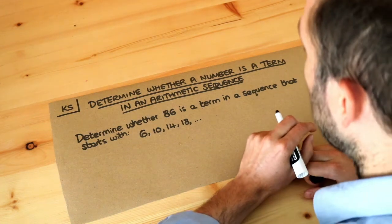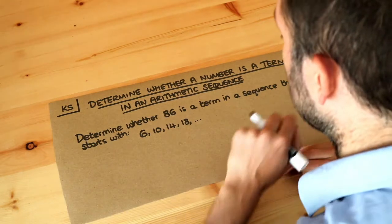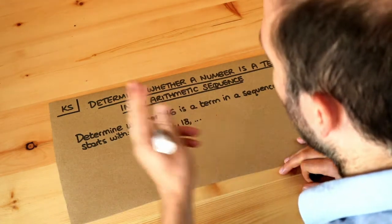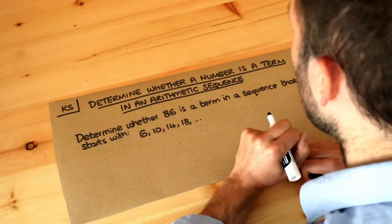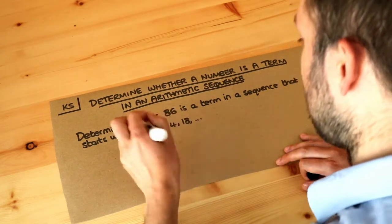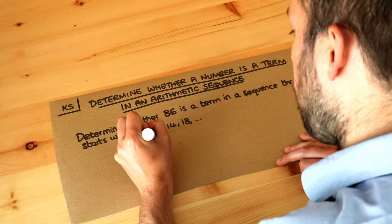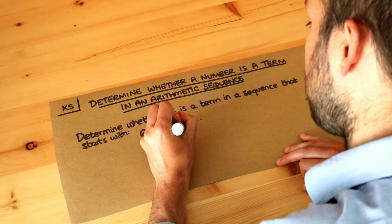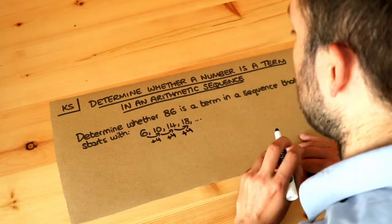In a previous video we explored that an arithmetic sequence is just a sequence of numbers where you're either adding the same amount each time or subtracting the same number each time. You can see for this particular sequence we're adding four each time as we go up the sequence. So that is an arithmetic sequence.